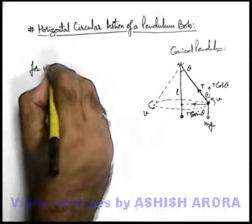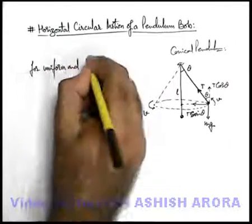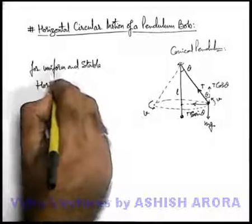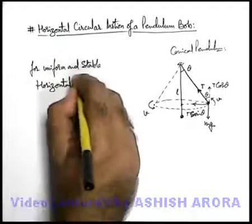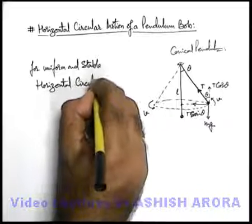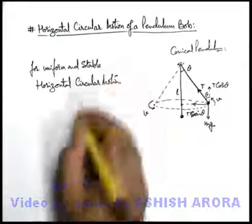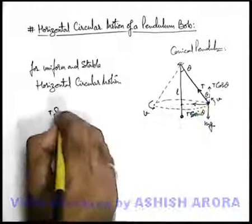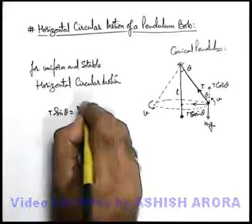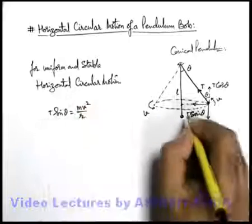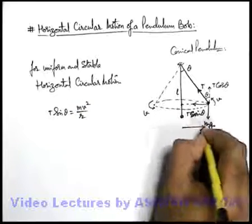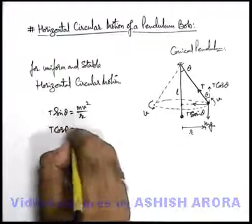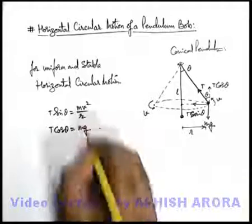So we can say for uniform and stable horizontal circular motion, we can directly use in this situation: t sine theta is the centripetal force, which should be m v square by r, if r is the radius of this circle. And t cos theta in this situation is balancing the weight of bob, that is m g.